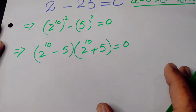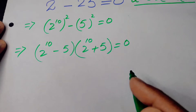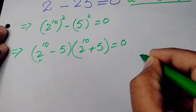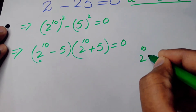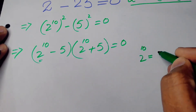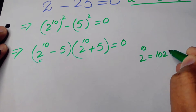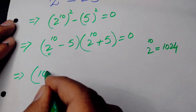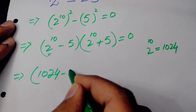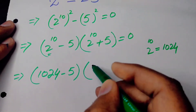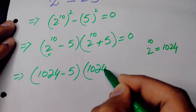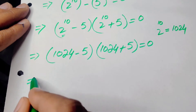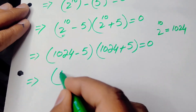Next, we find the value of 2 to the power of 10. We know that 2 to the power of 10 equals 1024, so we substitute that value and obtain: 1024 minus 5, times 1024 plus 5, equals 0.